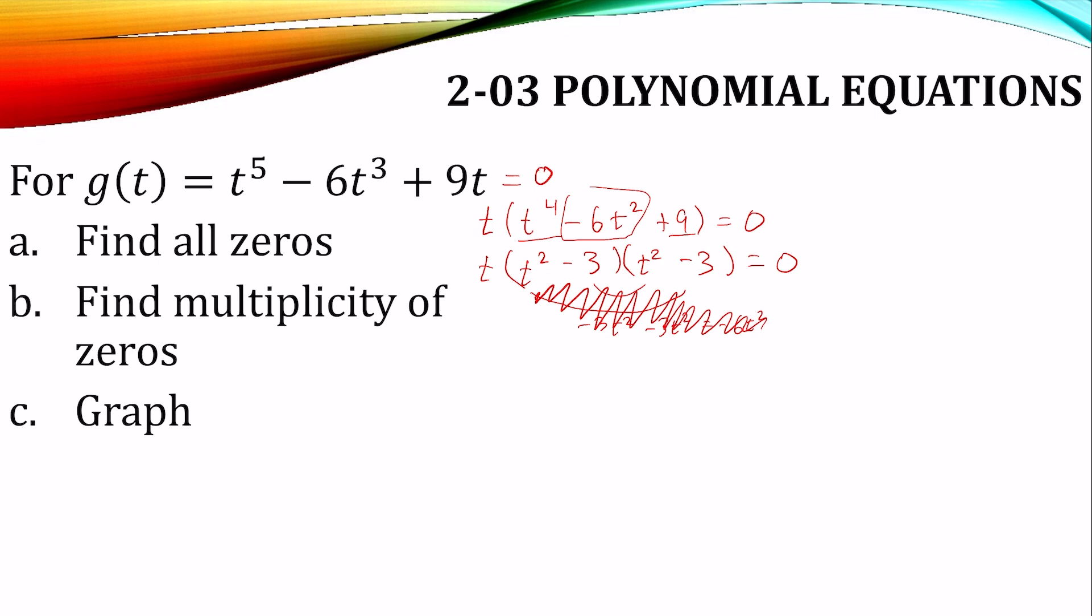Now we can take each factor equal to zero. So we get t = 0. And when you take a square root when you're solving, don't forget the plus and minus. And of course, this other one is exactly the same. So our zeros are 0, √3, and -√3.